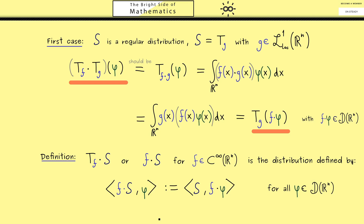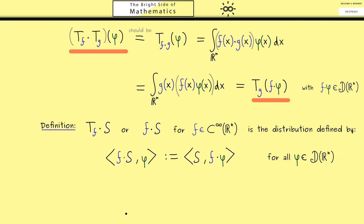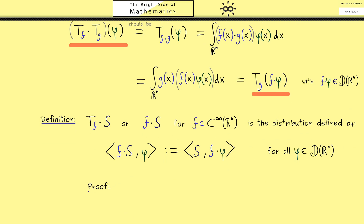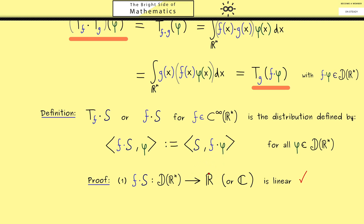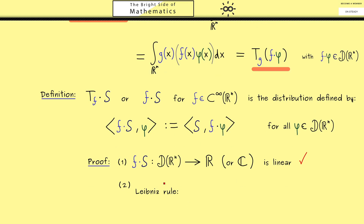Now one has to check that this new object indeed fulfills the two properties of a distribution — in short, we need linearity and continuity. The proof here is not hard at all. First, linearity of this new map we immediately see: the addition and scaling is no problem in the second argument. Therefore we only have to show continuity. The only ingredient we need here is the Leibniz rule for partial derivatives — the product rule when we calculate the partial derivative of a product.